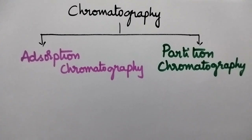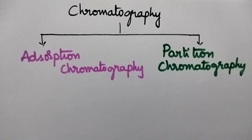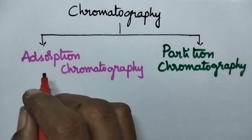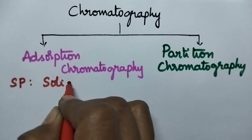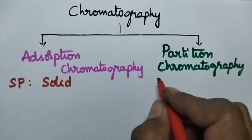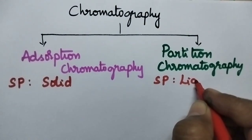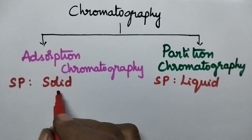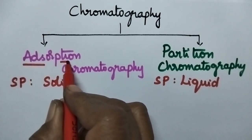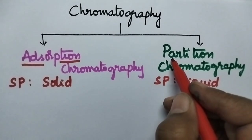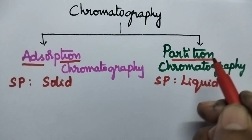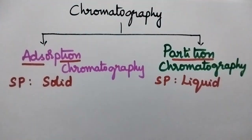Coming to the classification of chromatography, chromatography can be classified into two types: adsorption chromatography and partition chromatography. In adsorption chromatography, the stationary phase is solid, whereas in partition chromatography, the stationary phase is liquid. The separation in adsorption chromatography is based upon adsorption, whereas in partition chromatography, the separation is based upon partition.